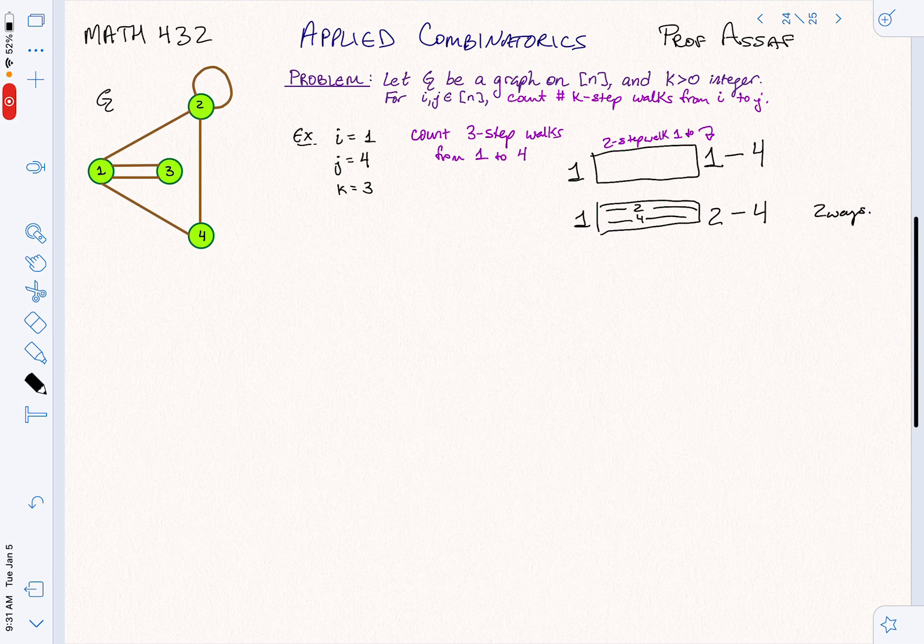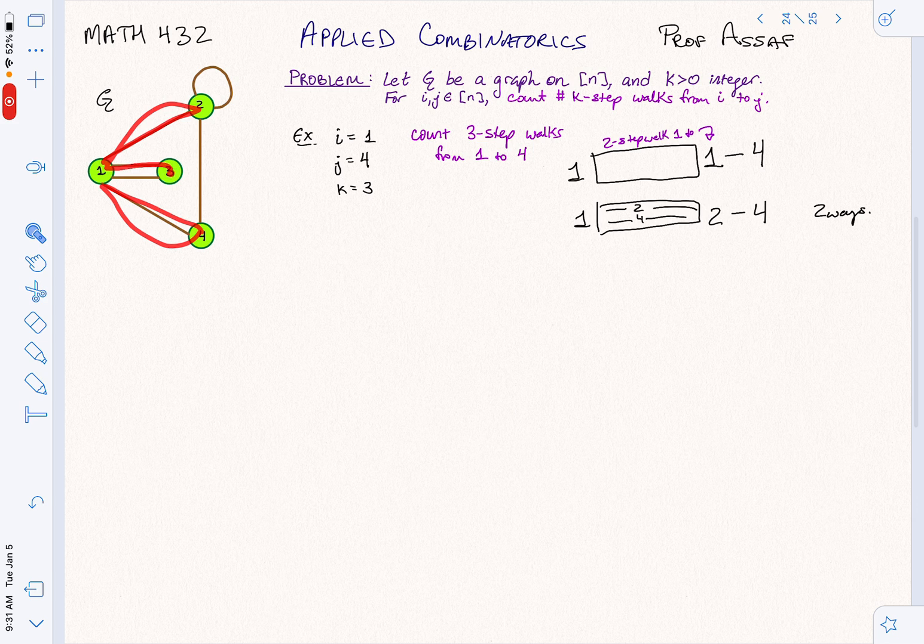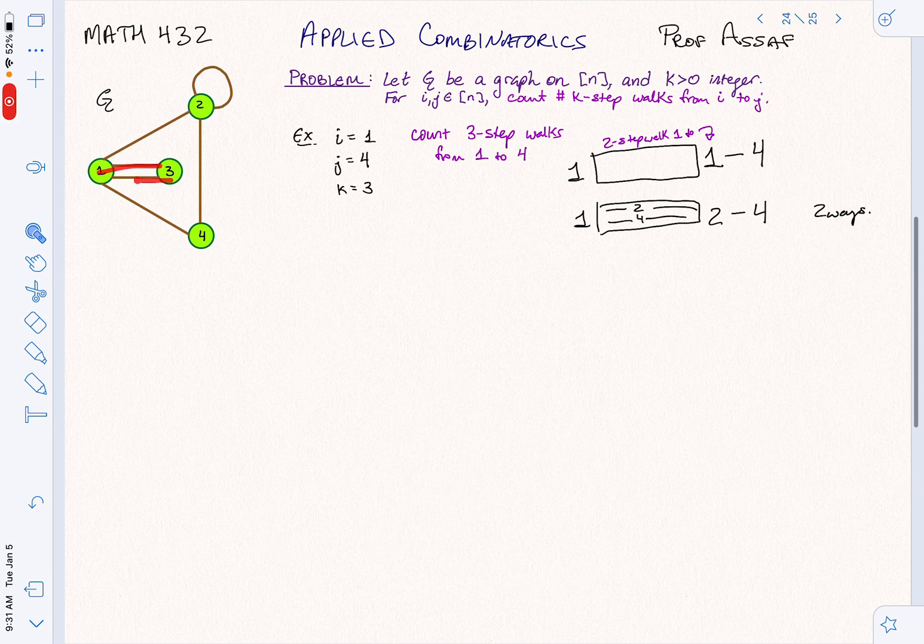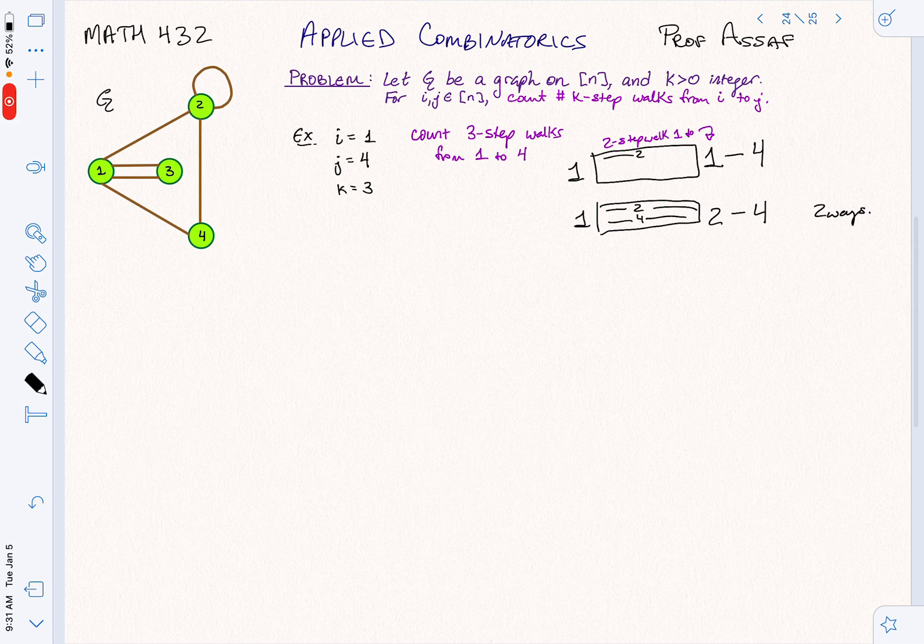And now what about from 1 to 1? This one, there are actually tons of ways we could do it. We could go to 2 and back. We could go to 4 and back. We could go to 3 and back, but this one we can do in four ways. Why four ways? Because there are two choices for how to get to 3 and two choices for how to get back.